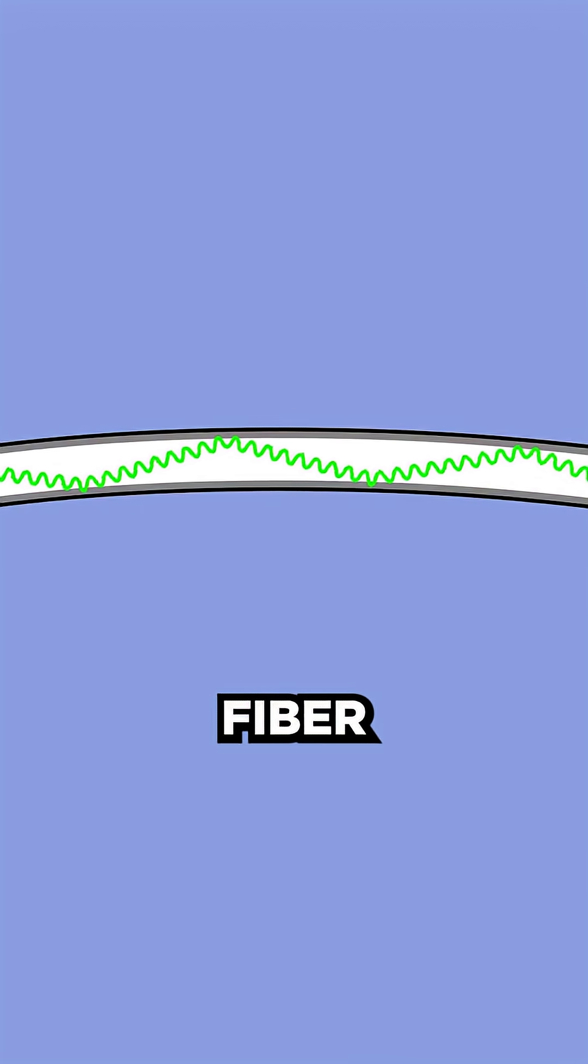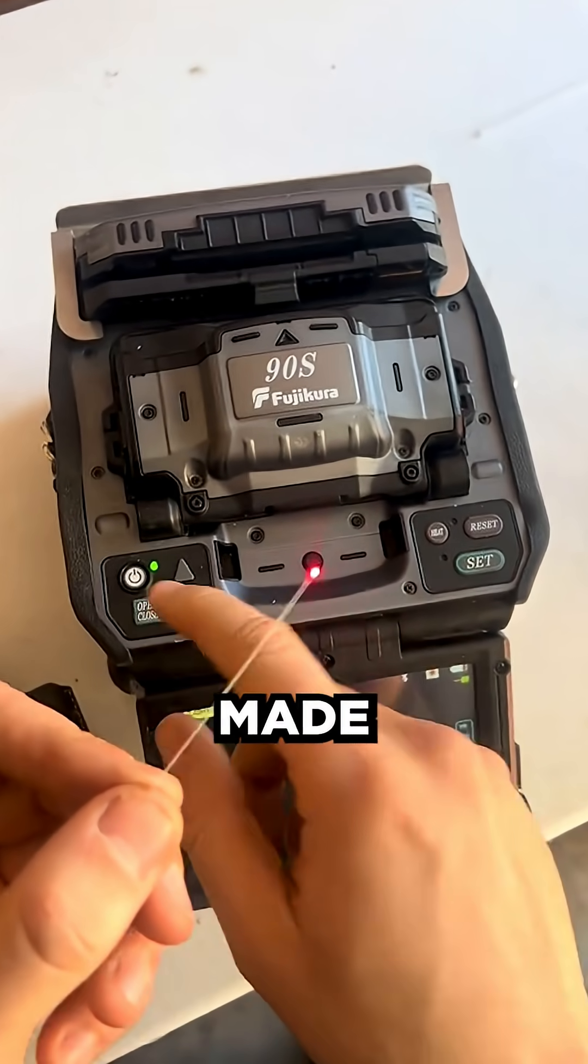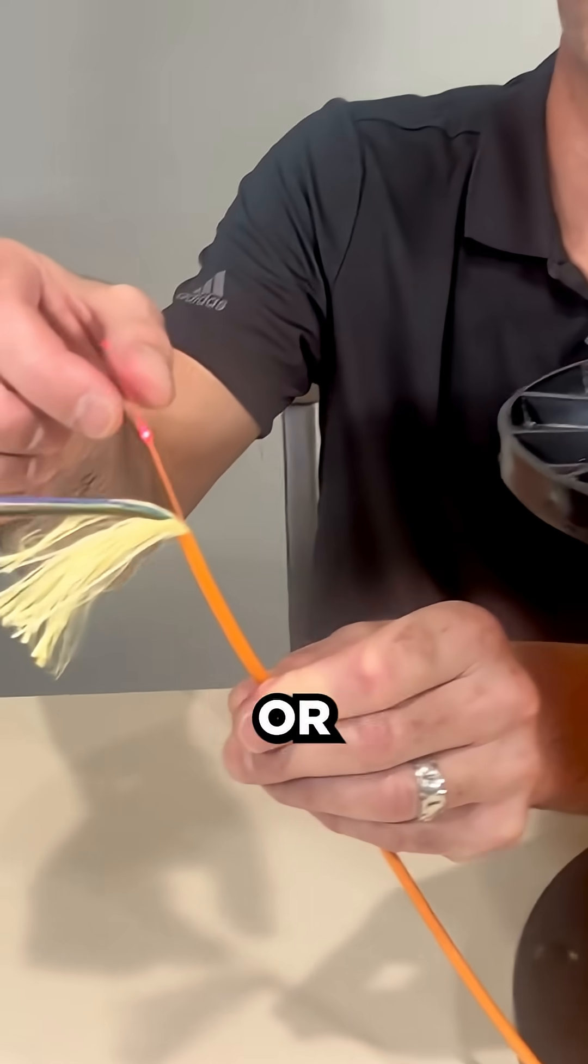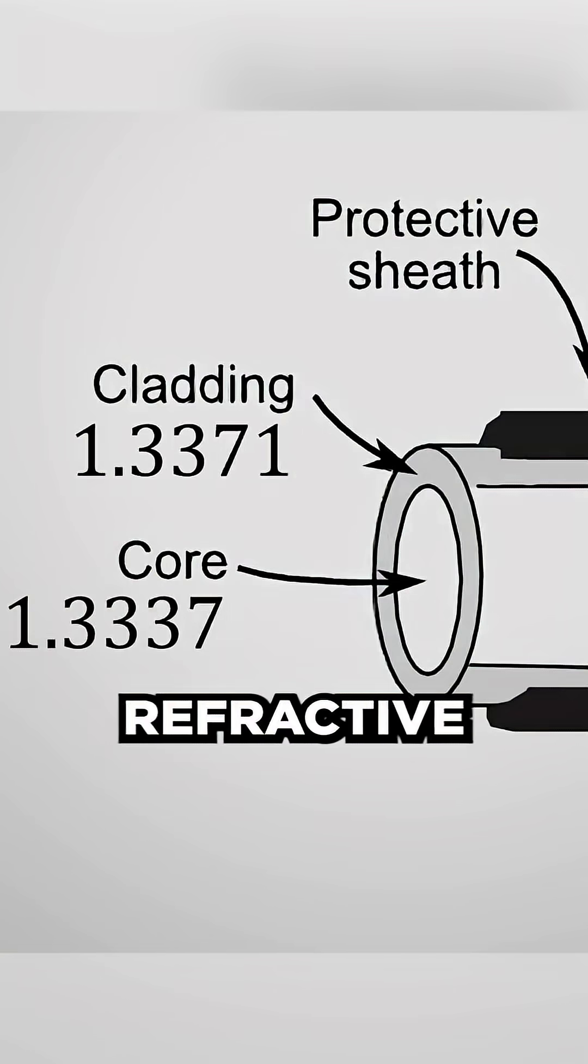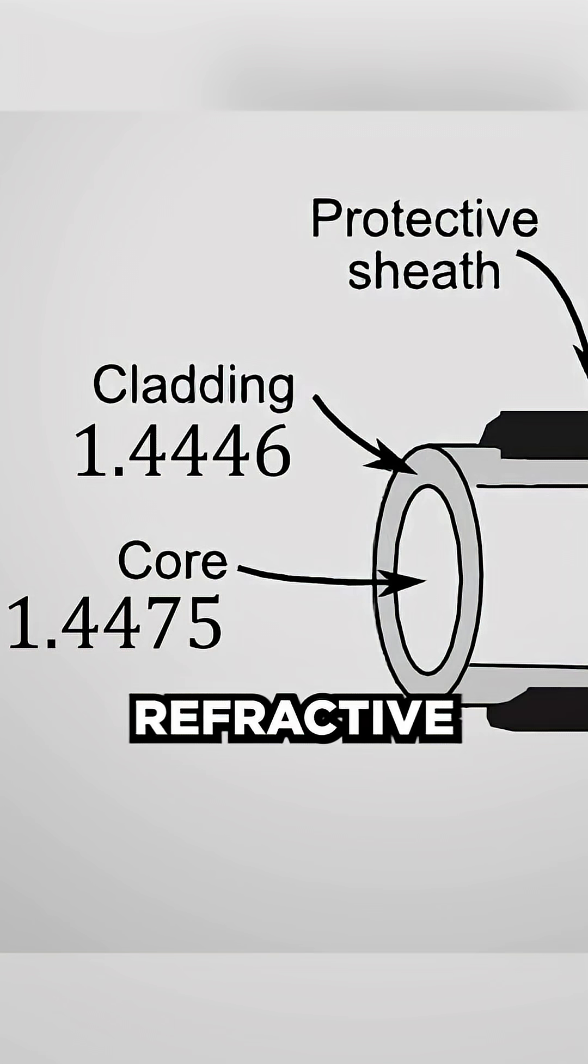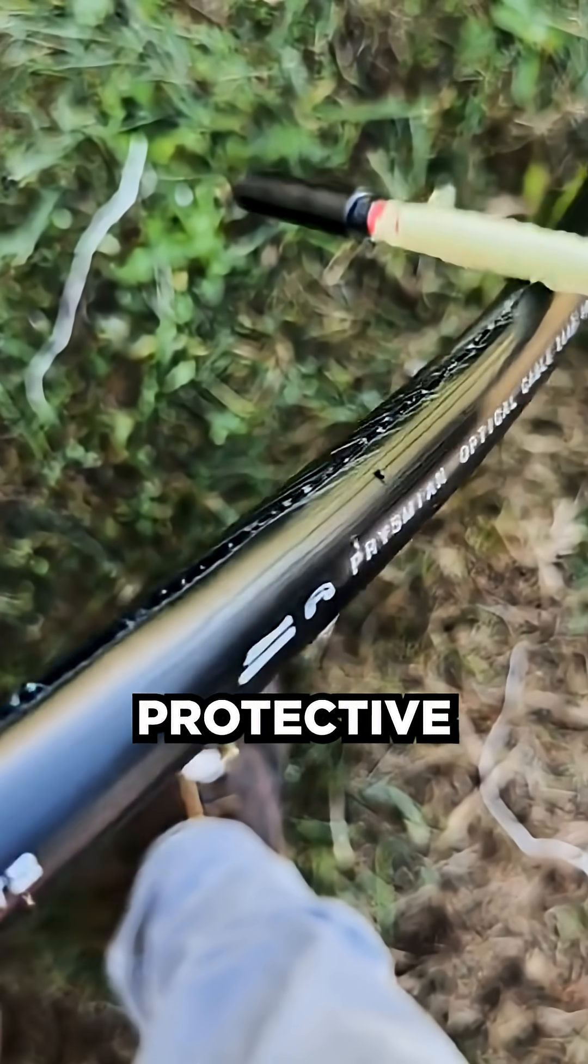This is the exact principle behind fiber optics. A fiber optic cable is made of an ultra-thin thread of glass, or plastic, called the core, which has a high refractive index. Surrounding it is the cladding, with a lower refractive index, and finally, a protective outer layer.